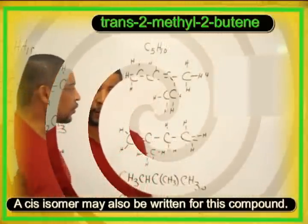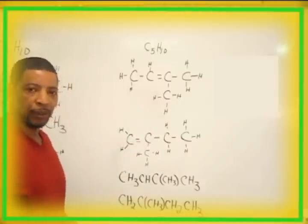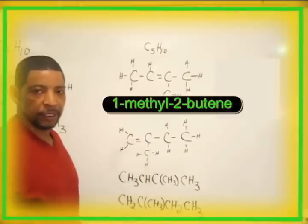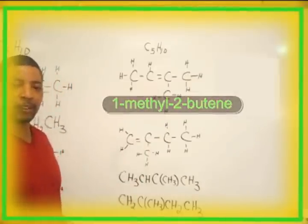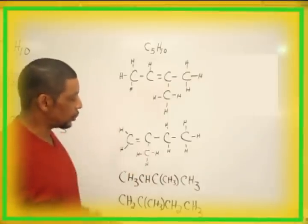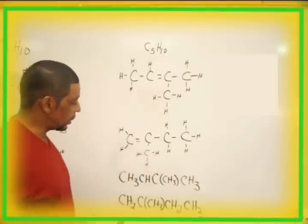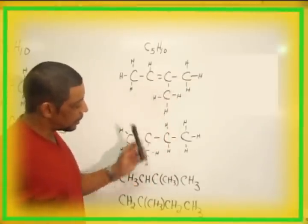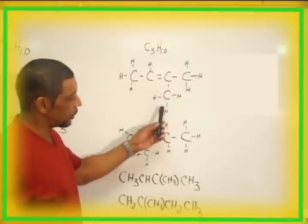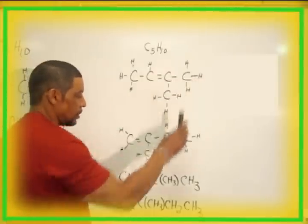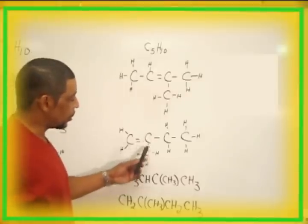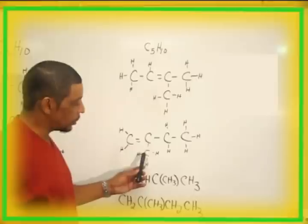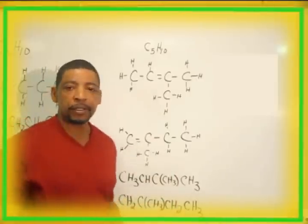An isomer of trans-2-methyl-2-butene would be a compound known as 2-methyl-1-butene. To write the condensed formulas, simply copy the structural formula. For 2-methyl-2-butene, the condensed formula is CH3, CH, C with a methyl group in parentheses, and the terminal carbon CH3. For 2-methyl-1-butene: CH2, C with the alkyl group in parentheses, CH2, and CH3.